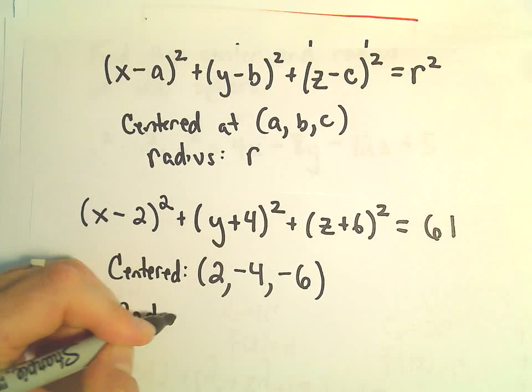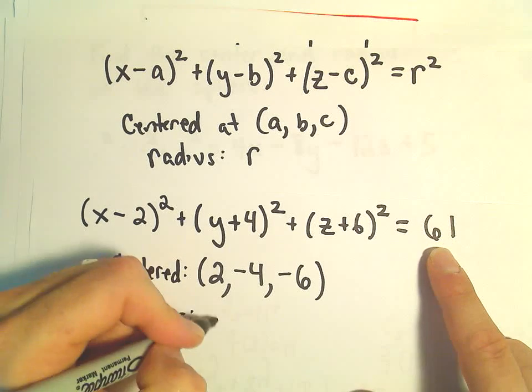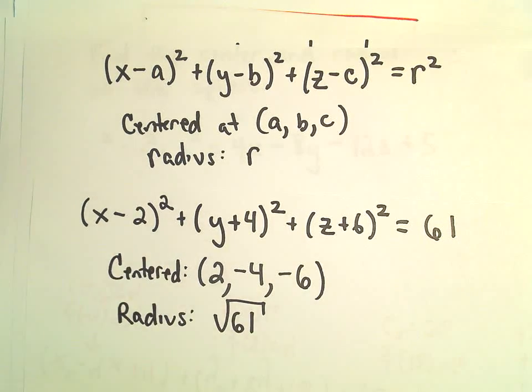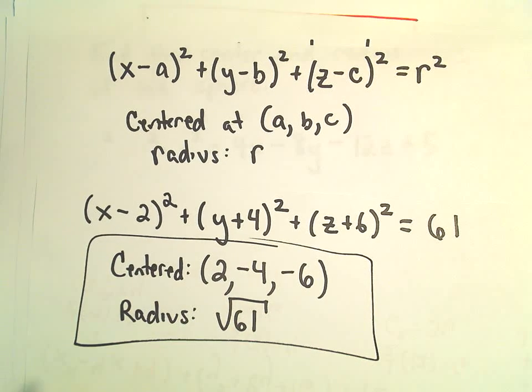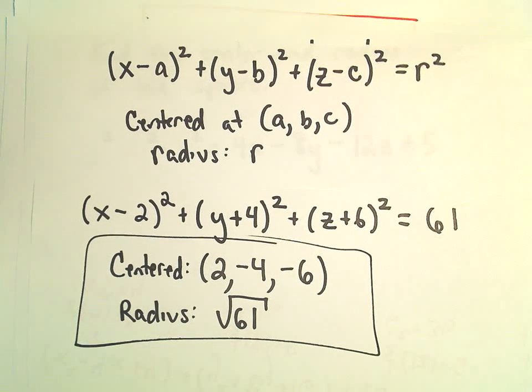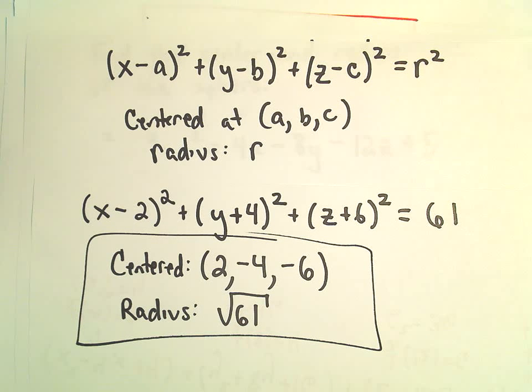And the radius, again, whatever number is just chilling out over there, we've got to take the square root of that. So we'll get the square root of 61, which is not going to simplify at all. So we've now got our solution. All you're doing is just completing the square a few times. Nothing worse than that.